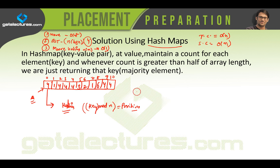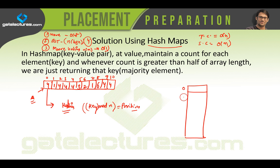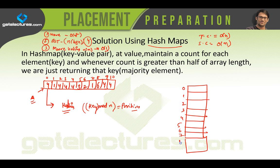I am going to use a hash table with a total of 10 locations at index positions 0 through 9. The interesting fact is that in this hash table we are going to store two values: number one is the key, and the second one is the count.